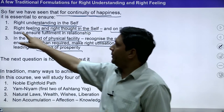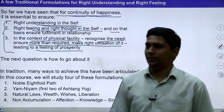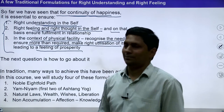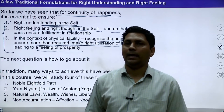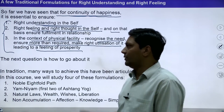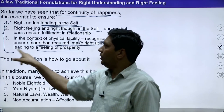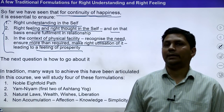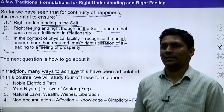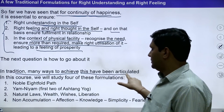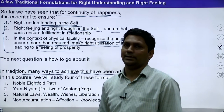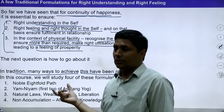Then in the context of physical facility, recognition of the need and right utilization of the available physical facility with the feeling of prosperity is required. So for continuity of happiness, these three things are required: right understanding, right thoughts and right feelings, and feeling of prosperity, so that we can assess our real requirement. In tradition, many ways to achieve this have been articulated.